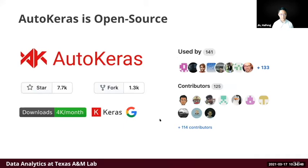We wrapped our solution into open source software called AutoKeras, which has received a large number of GitHub stars and forks, and is now officially part of the Keras open source community as the official AutoML library for Keras. It is supported by Google and is used by more than a hundred other repositories on GitHub, with many external contributors from the open source community.